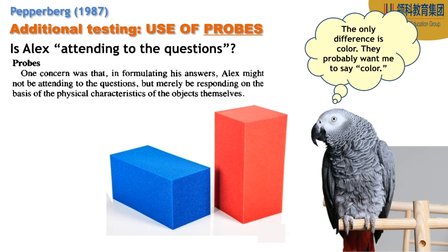Sometimes we're going to change the formula. We usually ask about similarity or difference when there's one similarity or one difference. So we might say 'What's the same?' and he should say 'matter' or 'shape.' The probes are mainly there as a check to see that he's actually listening, which helps increase the validity if he gets these correct. And he's going to get a lot of these correct — actually doing better on probes than on the regular ones.